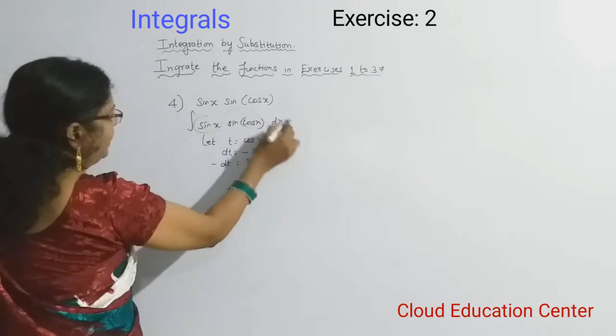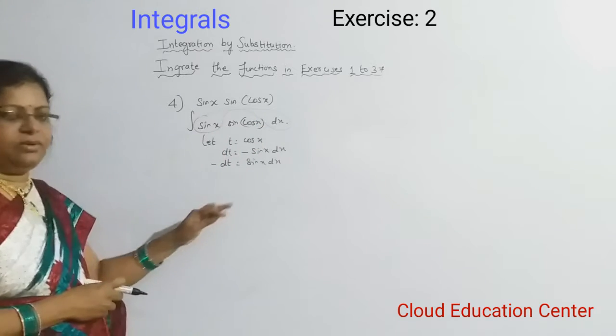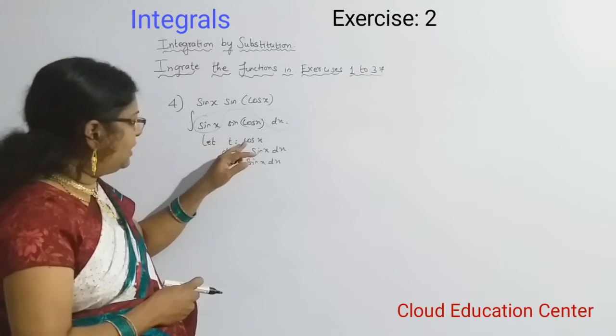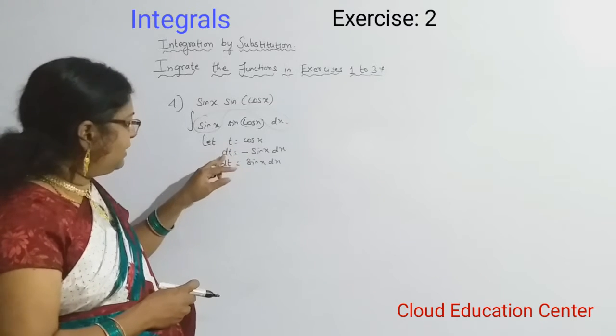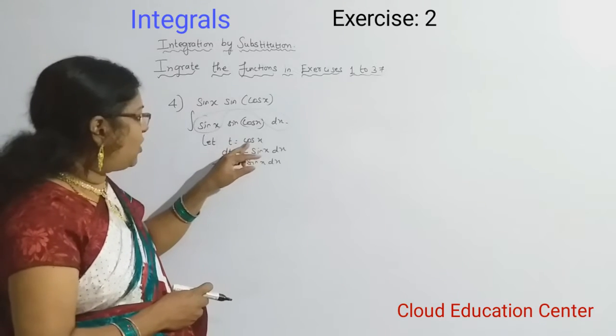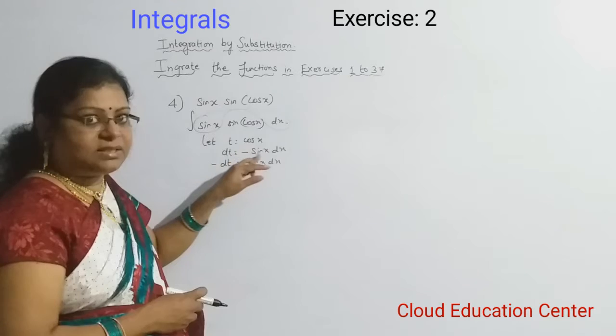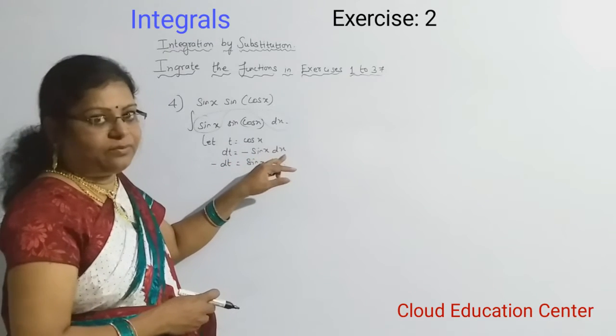But we have sin x dx, so no issue here. Understood? See, here we are assigning cos x equal to t. When we differentiate t, we are getting dt. When we differentiate cos x, we will get minus sin x, and dx we will get for x.